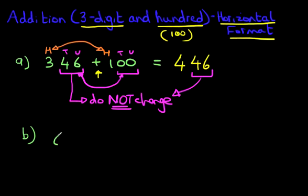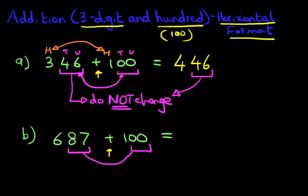Okay, we've got 687 plus 100. Okay, there's a plus sign. Plus 100. Now again, the same principle applies. We've got 0, 0. Add them together. Add them to the 87. 87 remains the same.